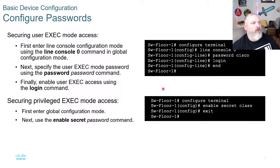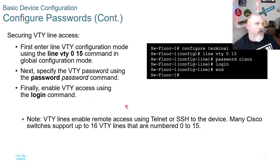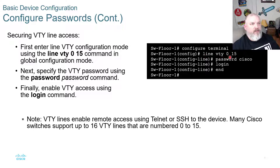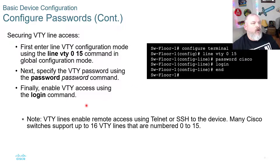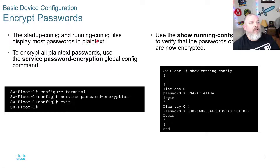You've now configured both user exec mode and privilege exec mode. Next, secure your VTY lines by entering line VTY configuration mode using 'line vty 0 15'. Enter your password command with your actual password, type 'login', press enter, then type 'end' to move back out. VTY lines enable remote access using Telnet or SSH to the device. Many Cisco switches support up to 16 VTY lines numbered 0 to 15. Next, you want to encrypt your passwords — startup config and running config files display most passwords in plain text unless encrypted.